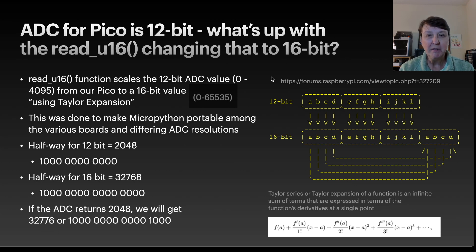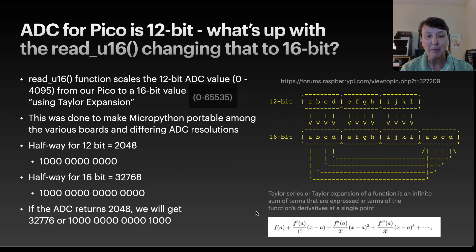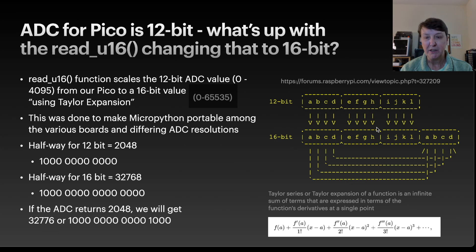I did some searching on Google and found information on a Raspberry Pi forum where someone was asking a very similar question. Someone responded saying it uses something called Taylor expansion. That wasn't fully helpful, but eventually someone responded with a nice diagram showing a 12-bit number in binary and a 16-bit number in binary, and showing how the read function converts the 12-bit number from the ADC into a 16-bit number.